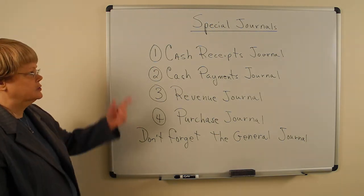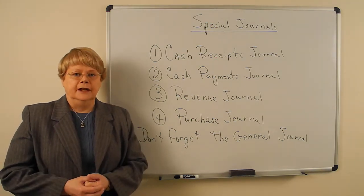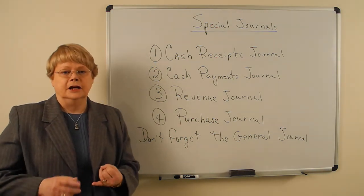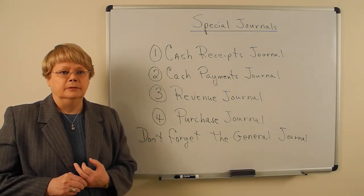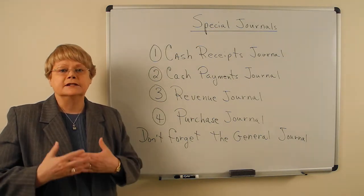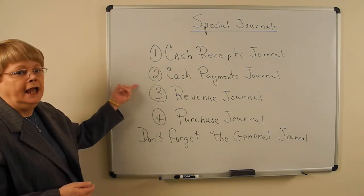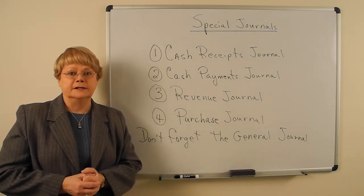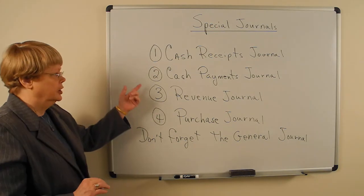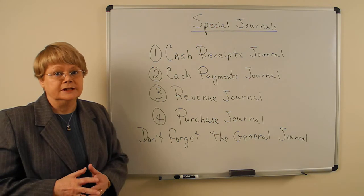In your cash receipts journal, you're going to have all cash that's coming in — that could be cash sales, cash revenue, payment on account, or interest on a loan. Any cash coming in goes into cash receipts. Any cash going out goes in cash payments. So if you see the word 'paid' in a transaction, it goes in cash payments; if you see 'cash received,' it goes in cash receipts.